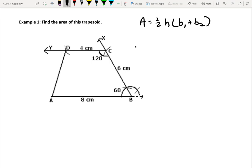Looking at my diagram, b1 equals 4 centimeters. That's right here. b2 on the bottom is 8 centimeters. Now, we have a problem here. We're not given the height.